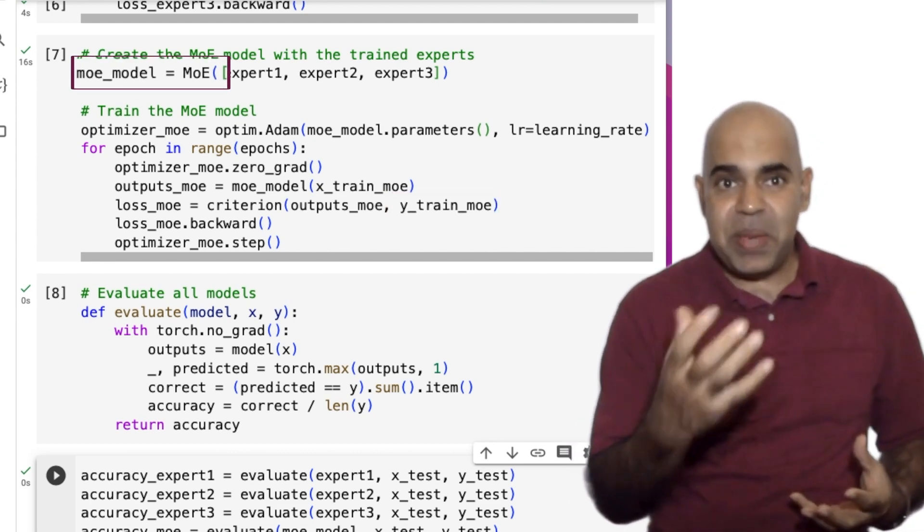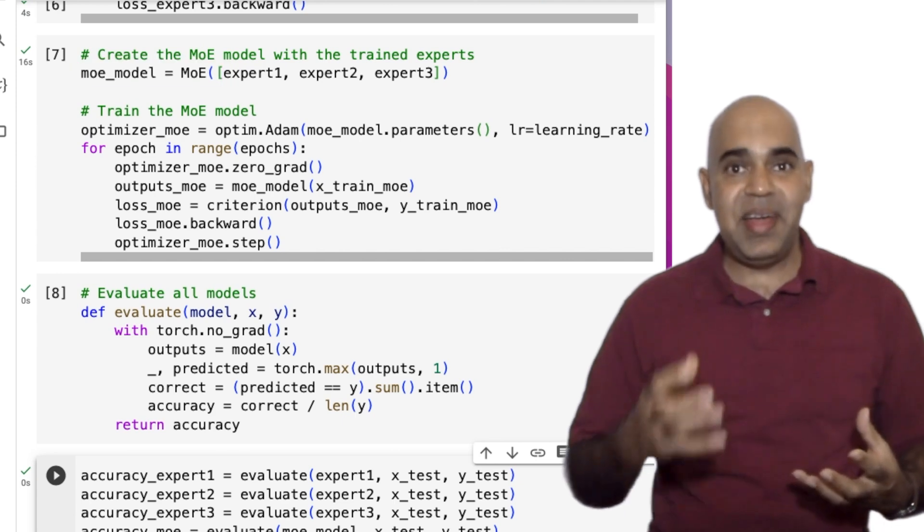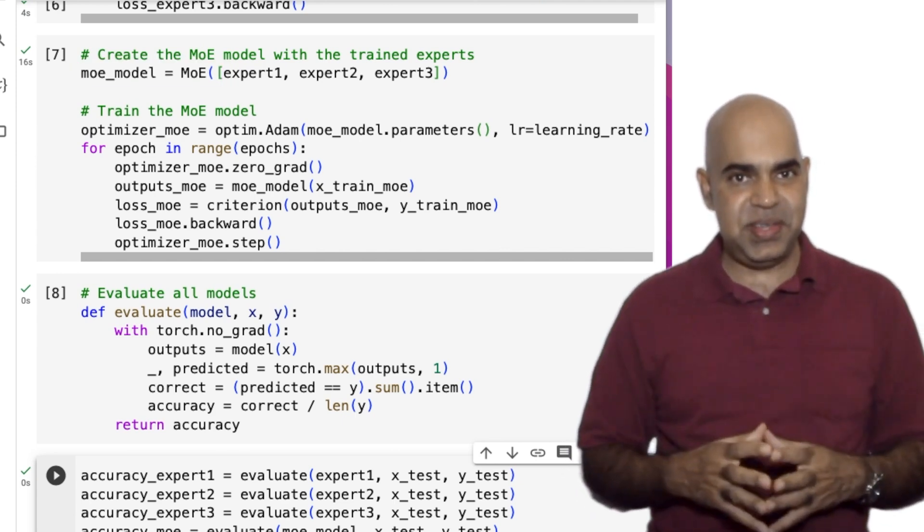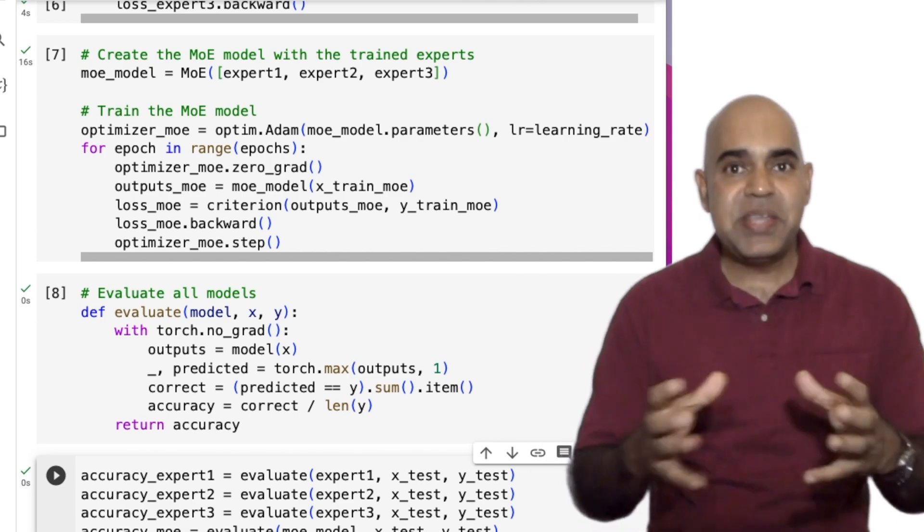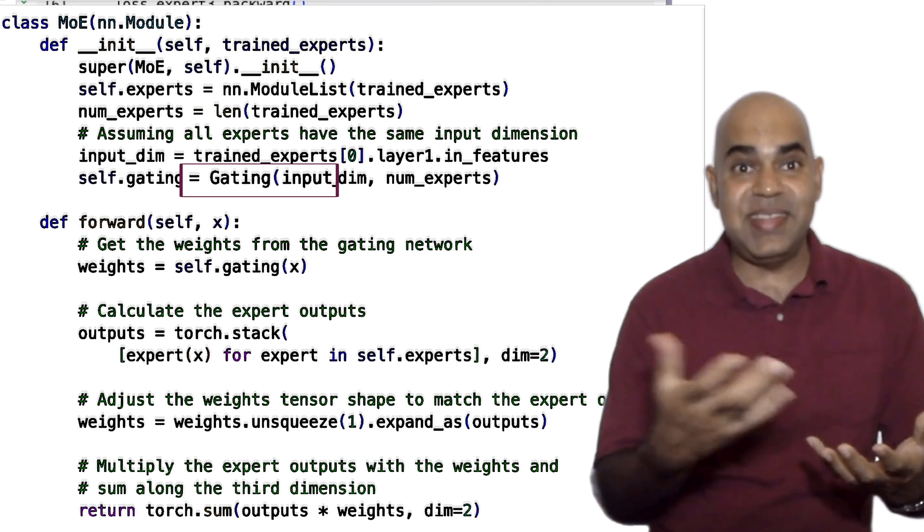Based on that, the mixture of experts will learn how to weigh the experts' decisions for different inputs. It's pretty simple but quite elegant. The mixture of experts eventually trains the gating network.